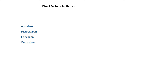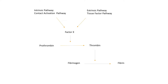Direct factor 10 inhibitors directly bind to inactivated factor 10. Factor 10 has a central role in the clotting cascade — it can be activated by both the extrinsic and intrinsic pathways. Once factor 10 is activated, it converts prothrombin to thrombin.